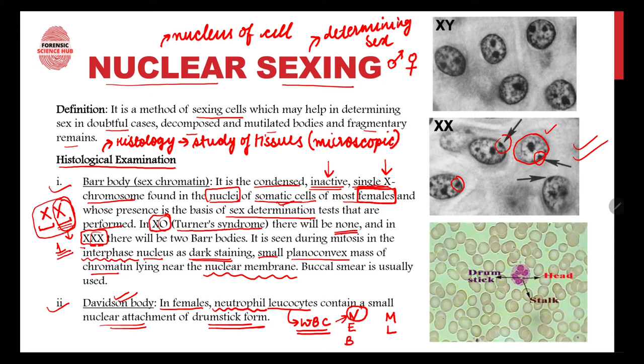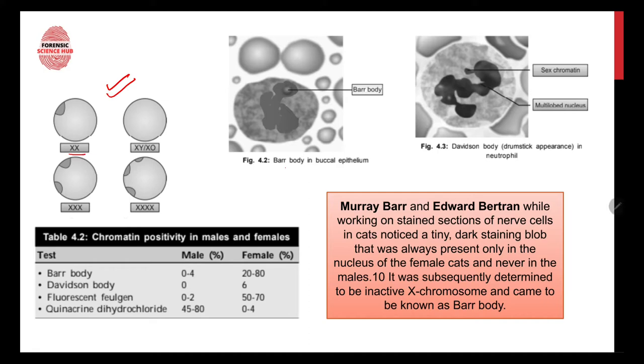The neutrophil leukocyte contains a small nuclear attachment in the form of a drumstick — this is the Davidson body. Looking at this picture, you can see the Davidson body clearly. In contrast, this picture shows an XY person — a male — and we can clearly see there are no Bar bodies, since males have only one X chromosome and one Y, with no additional X.